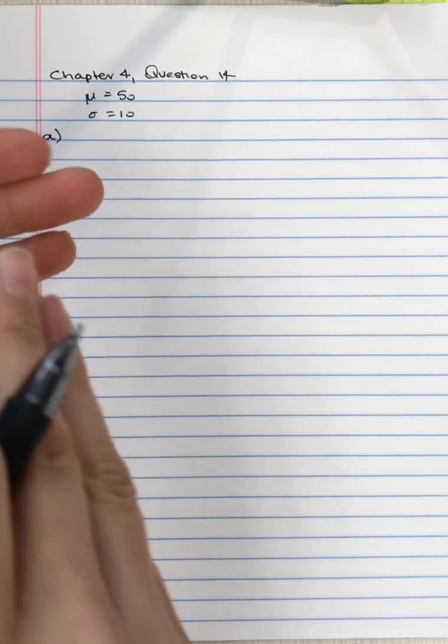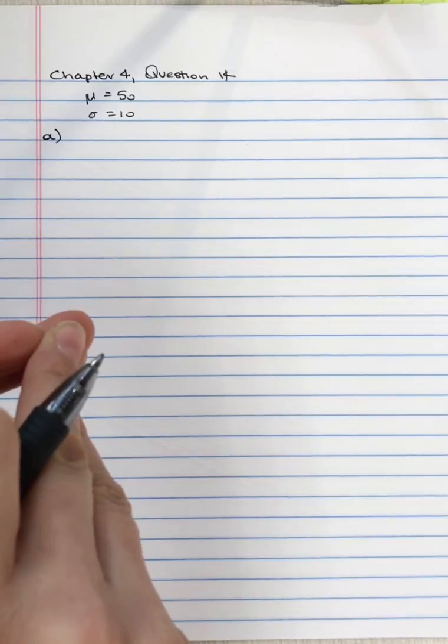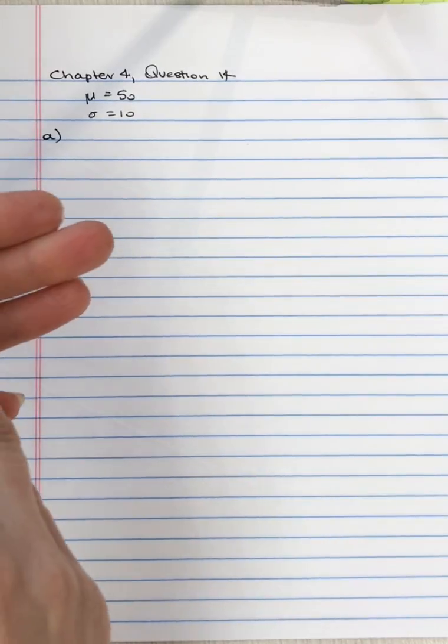What it requires is that we know the relationship - what happens when a constant is added to every score, and what happens to the mean and what happens to the standard deviation.